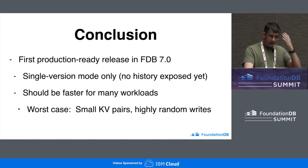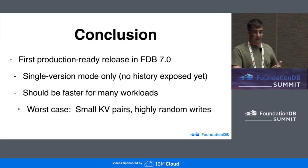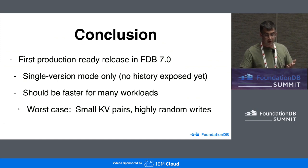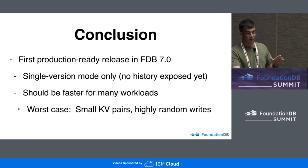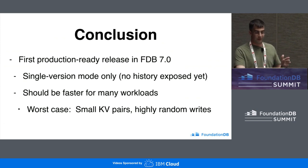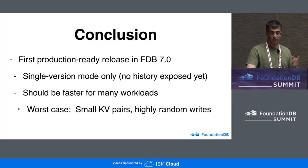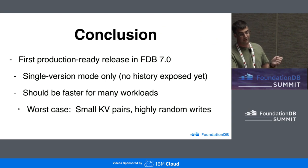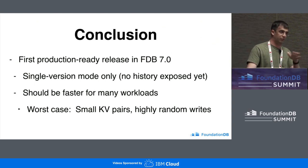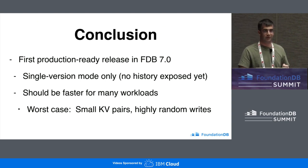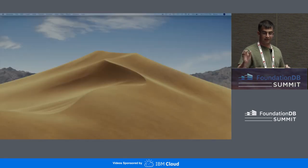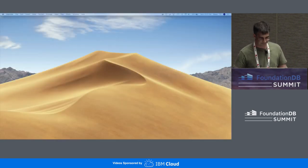The first production release of Redwood is planned for FDB 7.0. It will definitely be a single-version mode only — no history will be exposed yet, even though a lot of the internals are there. It should be faster for many workloads, but the worst case is going to be small key-value pairs with highly random writes and very little sequentialness. Thank you.